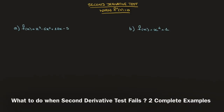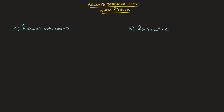Hi everyone. In this tutorial we're going to learn what to do when the second derivative test leads to f''(x) being equal to zero at a stationary point. For that we're going to consider the two functions that we see here. For each of them we need to find and classify any stationary points they may have. So let's get started.